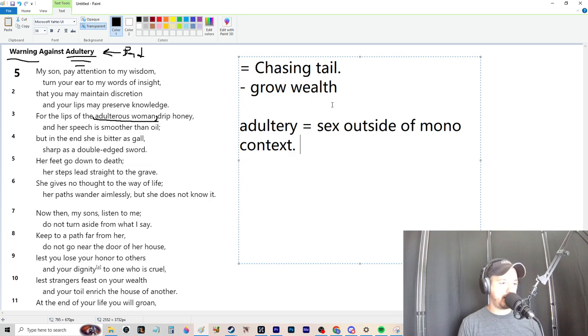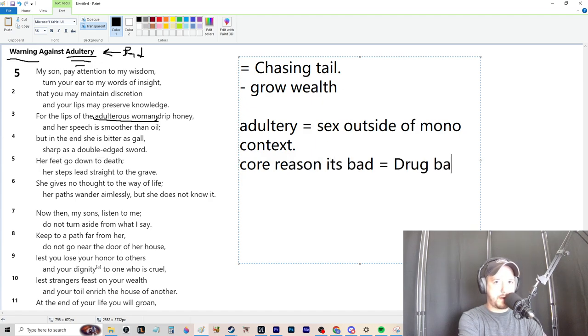So, I mean, that's a completely different conversation, but that's why I feel like the mono context here applies. So adultery, in that context, means sex outside of any mono context. So, in this context, why it is such a problem and why I feel this, I'm open to being wrong, but I'm pretty sure I'm not, but the core reason it's bad is it is nothing more than a drug habit.